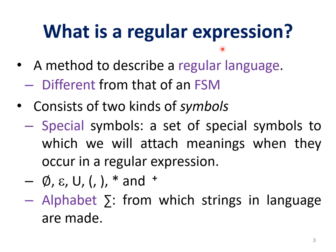So what is a regular expression? A regular expression is a method to describe a regular language, which is different from an FSM. It consists of two kinds of symbols: special symbols and alphabet. The set of special symbols to which we attach meanings when they occur in a regular expression are: null, epsilon, union, opening parenthesis, closing parenthesis, star, and plus. The alphabet Σ is from which strings in the language are made.